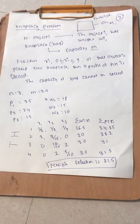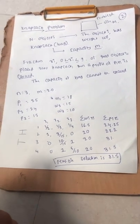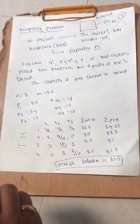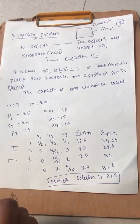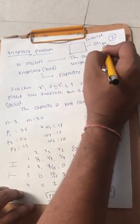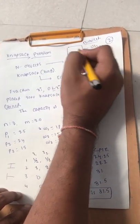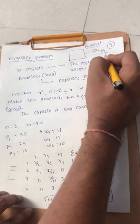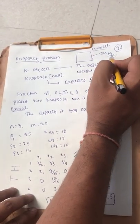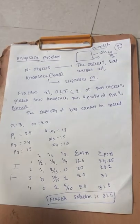Good morning friends. In the previous class we discussed about the optimal merge pattern using the greedy method. In today's class we are going to discuss the knapsack problem. This problem states that we have one bag with capacity m, and we need to put all n objects into the bag. The constraint is that the bag should not exceed the maximum capacity m, and the bag should be completely full.